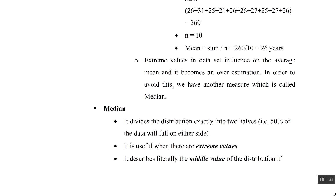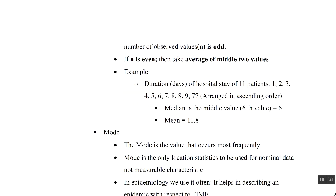Median is used when our data has extreme values — some very small, some very large. It divides the distribution exactly in half, and we take the middle value. If the number of observations is even, we take the average of the two middle values. For example, with 11 patients and their duration of hospital stays — some having only one day and some 80 days — we arrange the data in ascending order and, because it is an odd number, take the exact middle value, which is the sixth value.